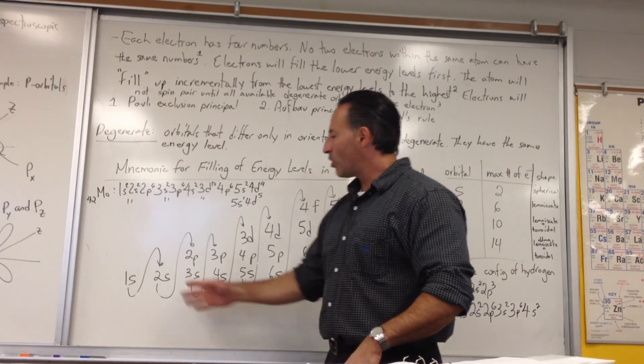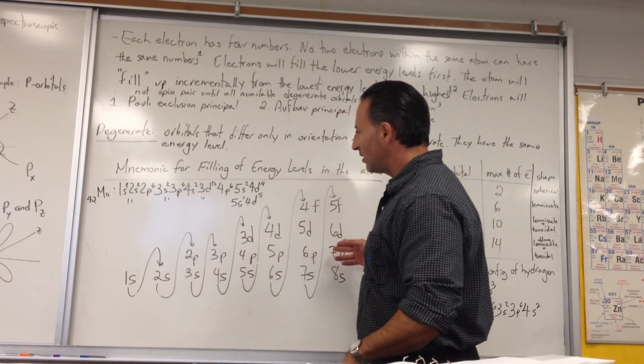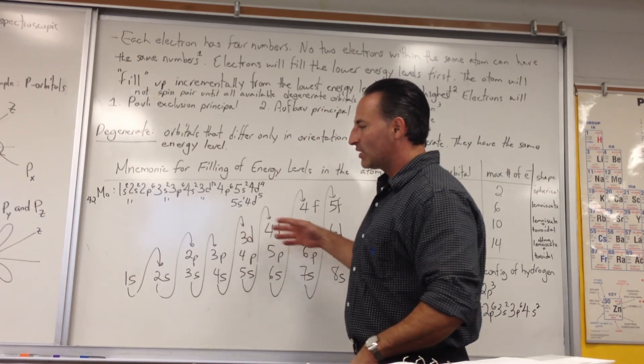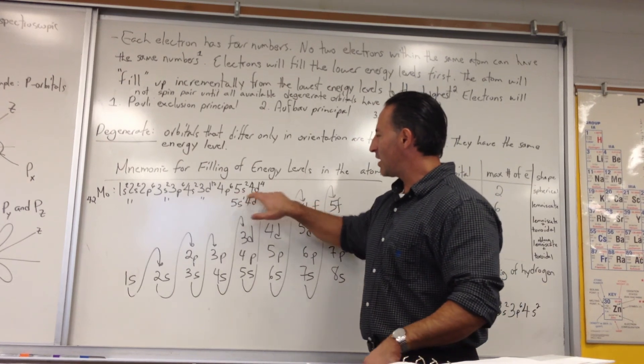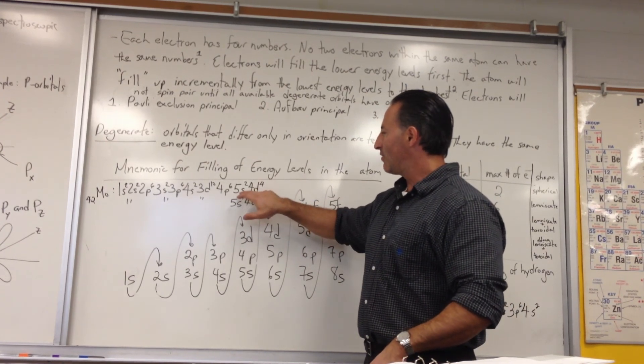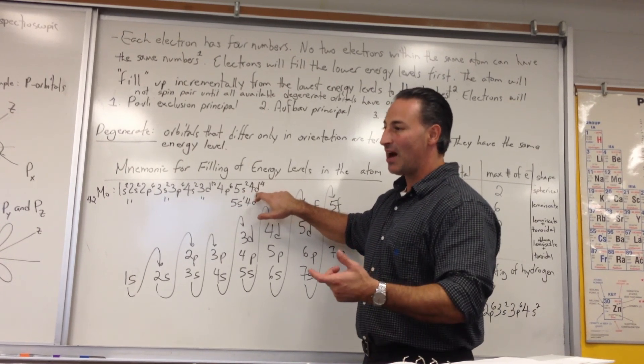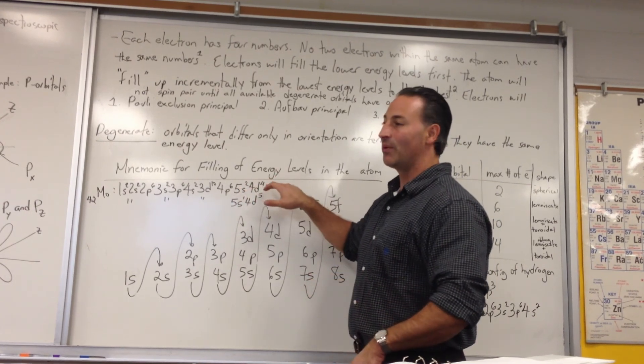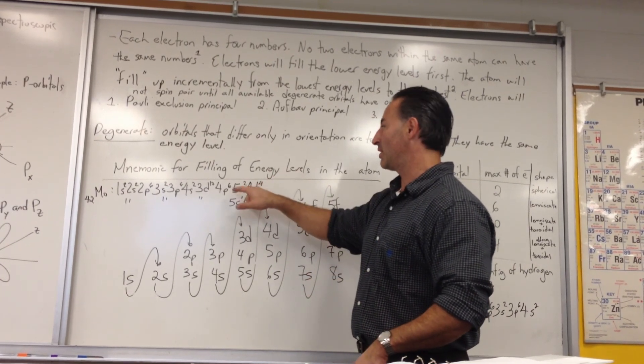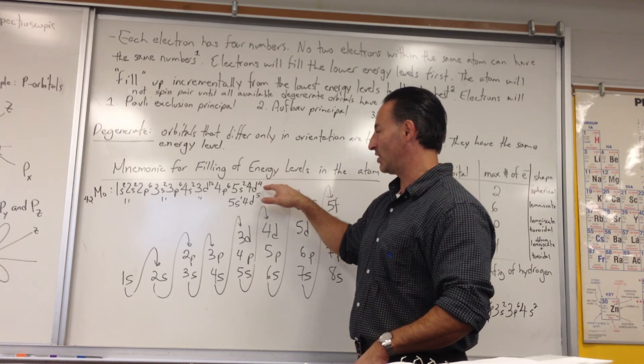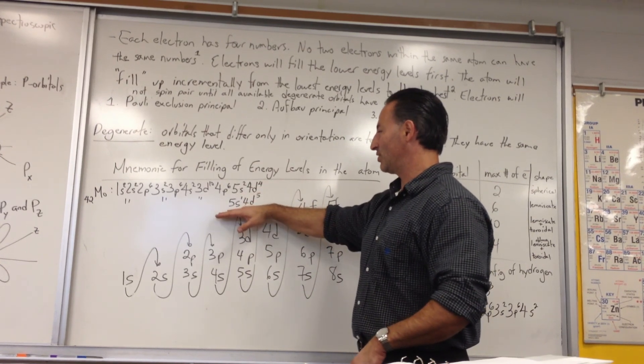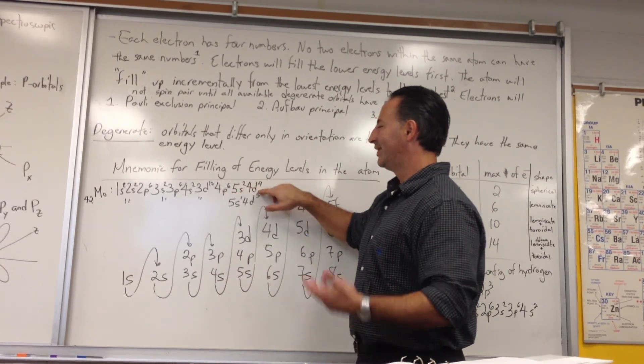We'll use this mnemonic. Normally what we'll do is we'll fill up the shell following the regular pattern. If we see that in the last couple of shells we have a situation where something is about to be half-filled, then we'll sometimes be able to predict that an electron will be promoted to the overlapping shell so that you get two half-filled shells instead of one filled and one incomplete.